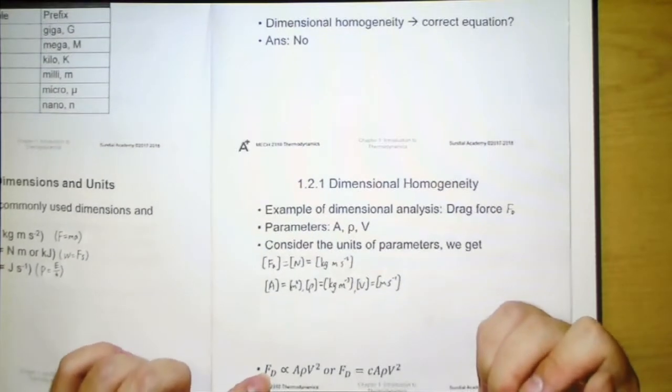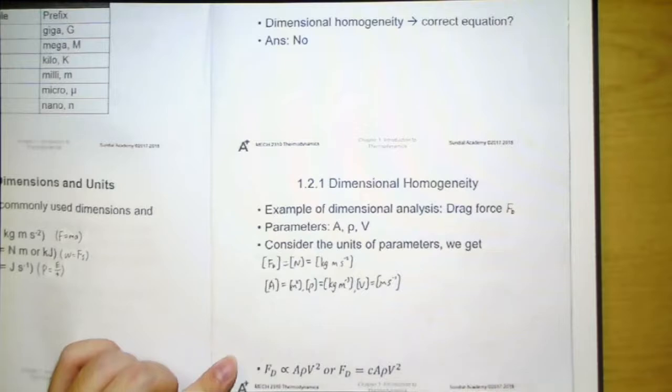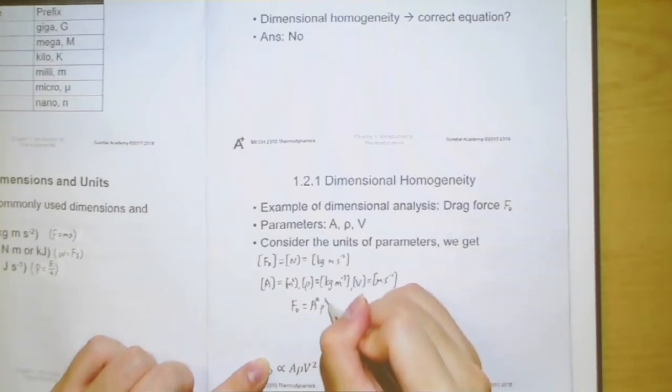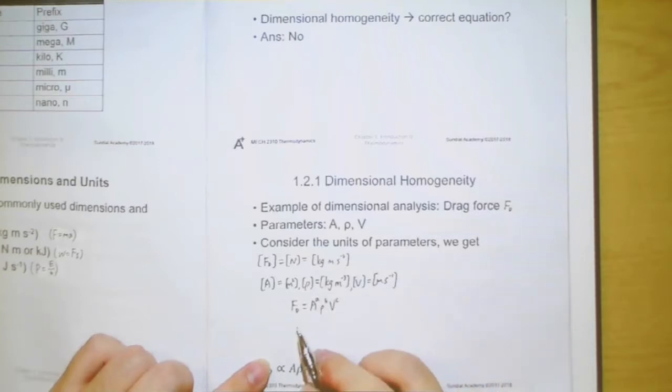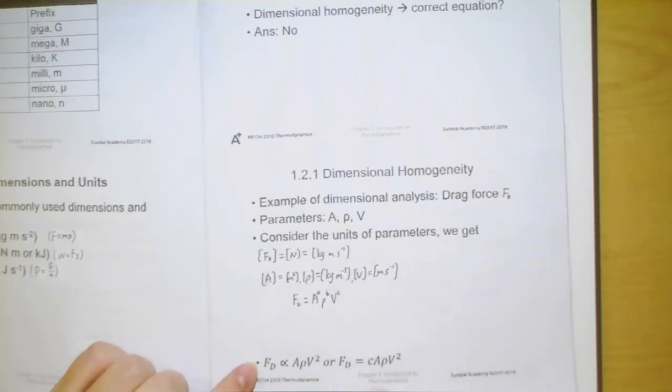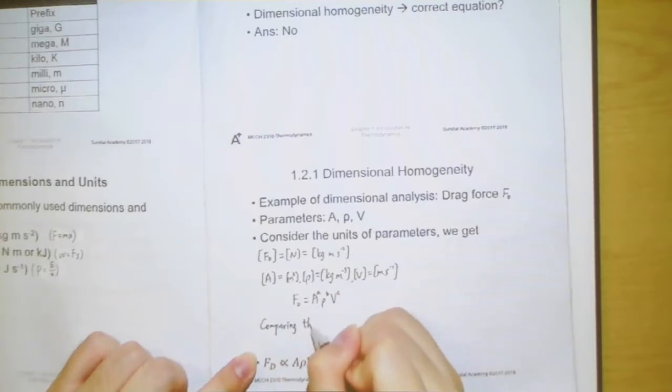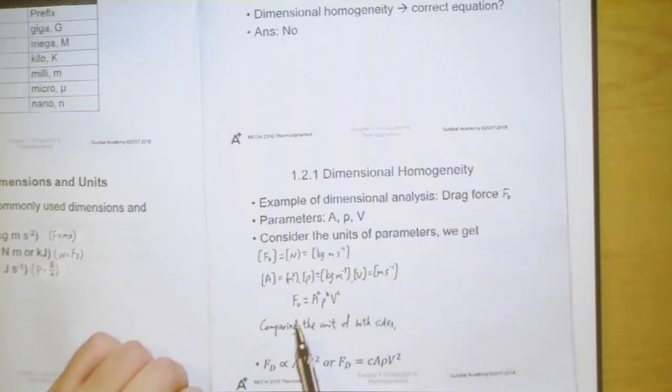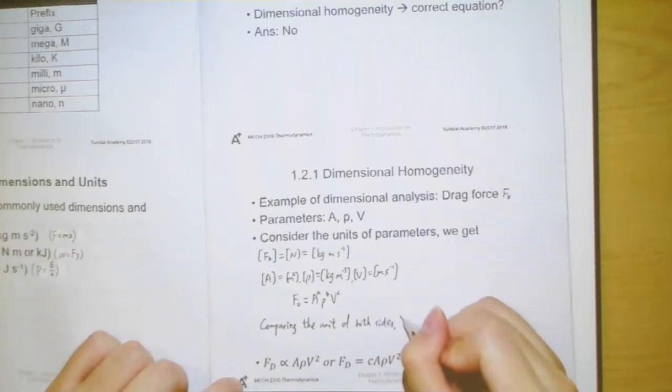So, how can we know the following relationship? We consider the units. We would write it as Fd equal to A to the power a, rho to the power b, and V to the power c. So, I just compare the dimensions of this relationship. We would use a, b, c to denote the index. And if we compare the units on both sides, for example, we can see that for kilogram, because we know that drag force will have a unit of kilogram here. And rho also have a kilogram with index one. And for other parameters, there isn't any kilogram. So, we can quickly see that b should be equal to one.